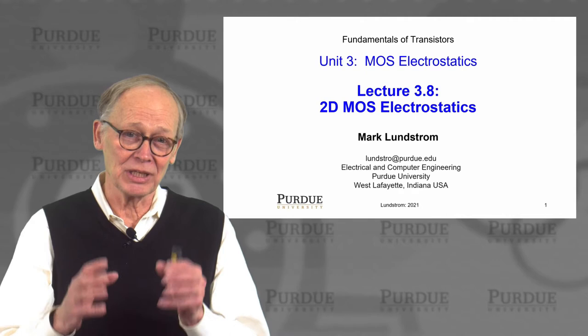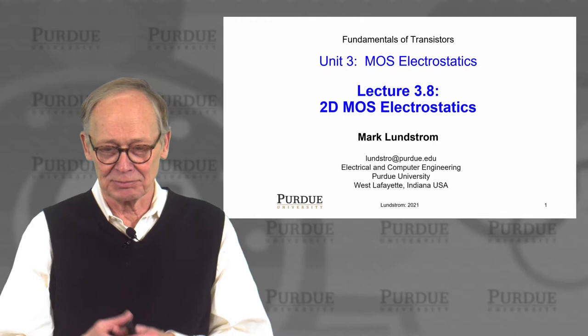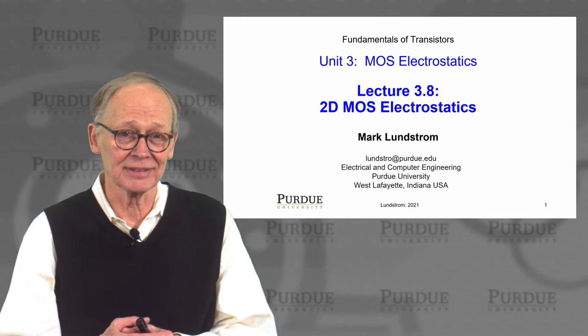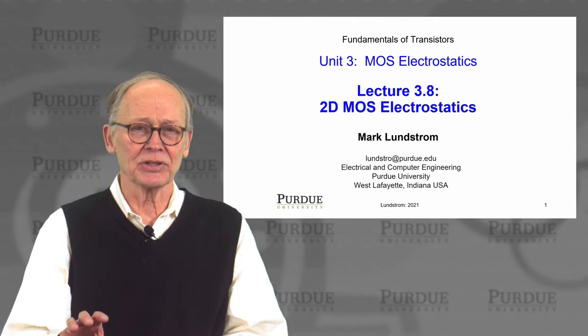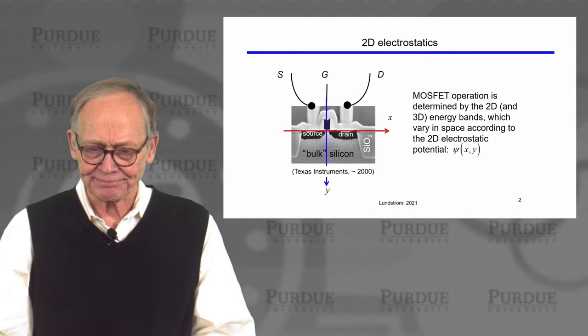Thank you for sticking with me in this long unit as we discuss MOS electrostatics. We're almost there. We've come to maybe the most complex part of the discussion. Small MOSFETs have two and three dimensional electrostatic effects. This requires a much more complicated analysis — numerical solutions of two and three dimensional Poisson equations. Because of that, we're going to focus on understanding qualitatively the important consequences of two and three dimensional effects on MOSFET IV characteristics.